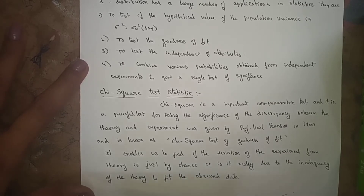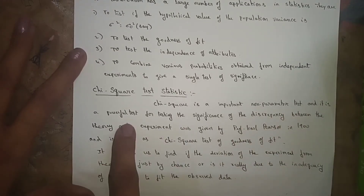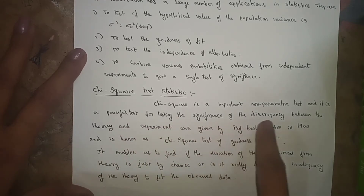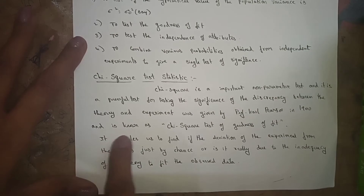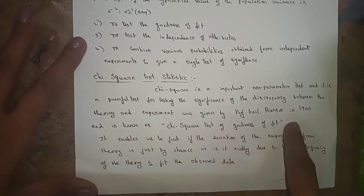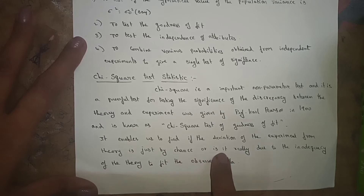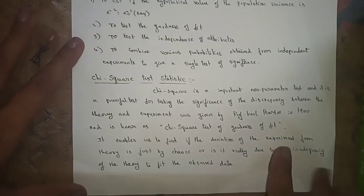Chi-square is an important non-parametric test and it is a powerful test for testing the significance of the discrepancy between theory and experiment. It was given by Professor Karl Pearson in 1900 and is known as the chi-square test of goodness of fit. It enables us to find whether the deviation of experimental from theory is just by chance or is really due to the inadequacy of the theory to fit the observed data.